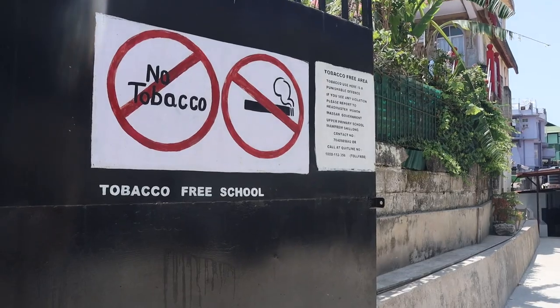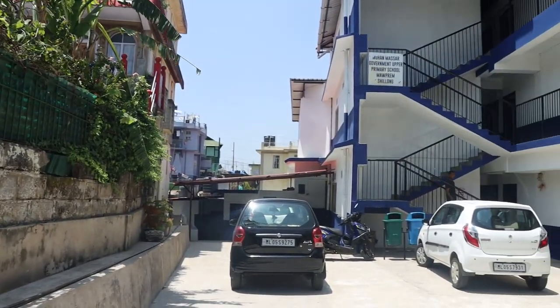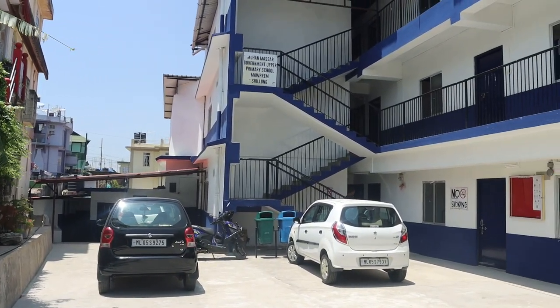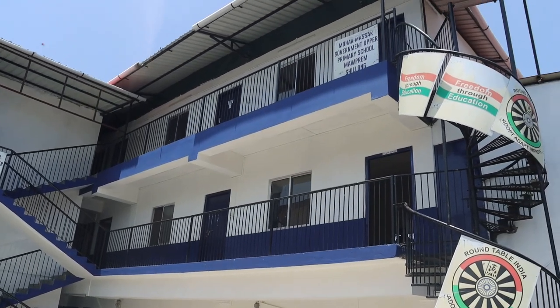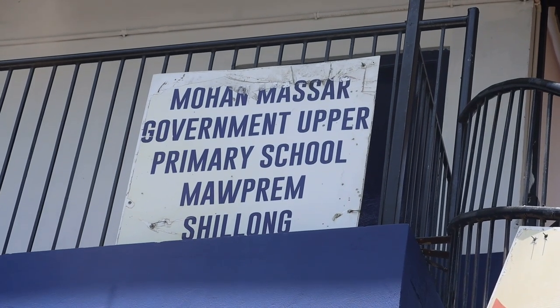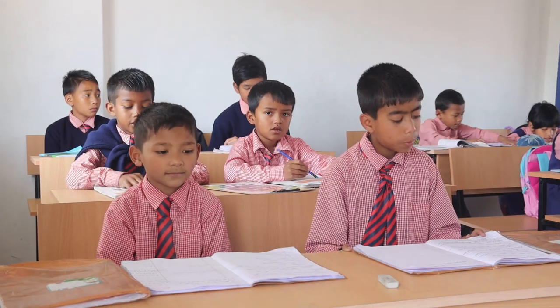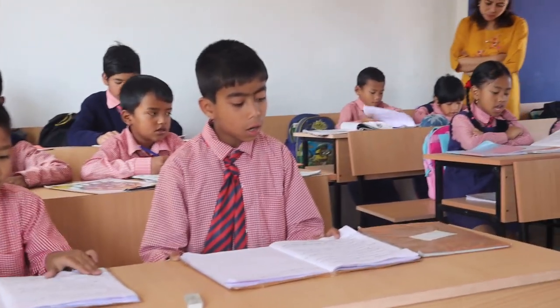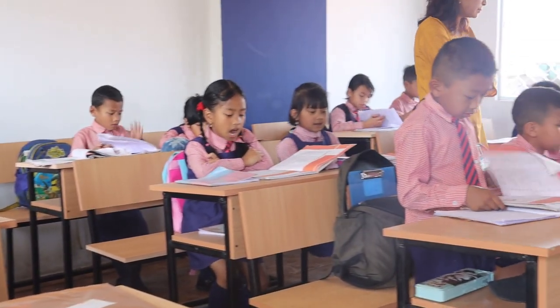Very good morning to you all. Our school, Mahanmasar Government Upper Primary School, is situated in Lower Mowbram in Shillong. It is a government school which was founded in the year 1955. Initially the school was up to class 5 level, but with the upgradation of the upper primary, it is now from class nursery up to class 8. The strength of the teachers is 11, including myself, who is the head teacher of the school.